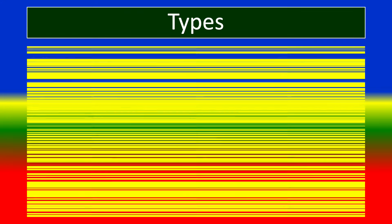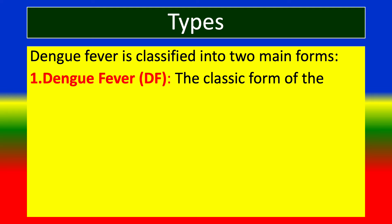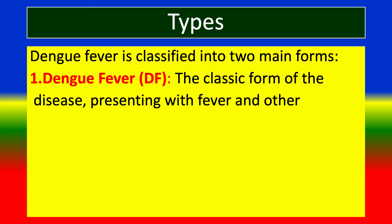Types. Dengue fever is classified into two main forms. The first is Dengue Fever (DF), the classic form of the disease, presenting with fever and other common symptoms.